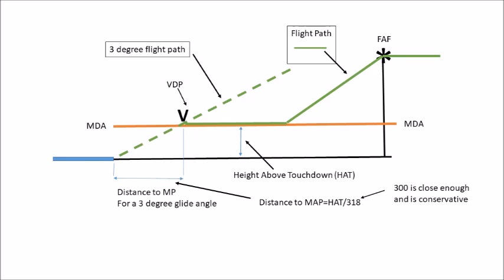What we're trying to identify with the visual descent point is where will I leave the MDA to have a stabilized glide angle of three degrees. The goal is to identify a point where we intercept the three-degree glide angle, and also identify a point where if we fly beyond that point - inside the VDP - the glide angle for descent to the runway would be steeper and steeper as we move closer to the runway.